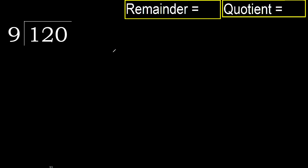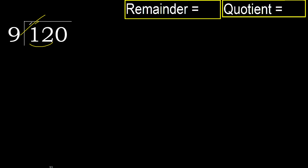120 divided by 9. 1 is less, therefore next: 12. 12 is not less, therefore work with 12. Find which number, when multiplied by 9, is nearest to 12 but not greater.